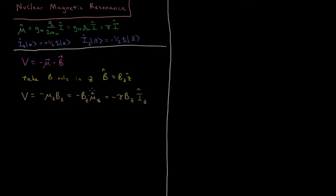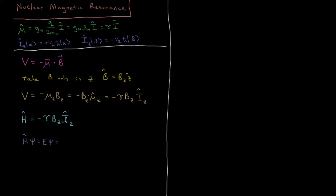We can now define a Hamiltonian for this system. Our Hamiltonian operator has no change to kinetic energy, so it's just our potential energy: minus gamma times the Z component of the magnetic field times our operator I_Z. We can now define a Schrödinger equation for this system. We know that H-psi equals E-psi, and we assume our wave function is either the spin-up or spin-down state, alpha or beta. These are eigenfunctions of I_Z, and the Hamiltonian is just I_Z times a constant.